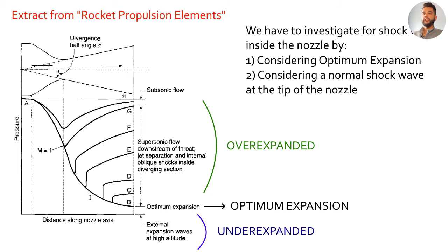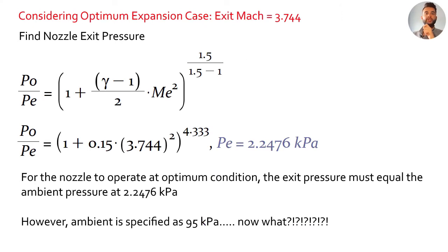Now let's look at the nozzle performance. Obviously rocket nozzles don't always operate at the condition explained in the previous slide. That Mach number was for optimum expansion but obviously you may have differences so we need to look at the cases of over expansion and under expansion. Let's look at shock waves inside the nozzle. Do they occur or do they not? The way you check for shock waves is that you first consider optimum expansion and then you consider a normal shock wave at the tip of the nozzle. Let's first do optimum expansion case. P0 over PE equals all that and then we can get the PE at 2.2476 kilopascals. The exit pressure to create an optimum flow condition is 2.247 kilopascals. But we have the problem here that the ambient pressure is 95 kilopascals. It's more than the exit pressure.